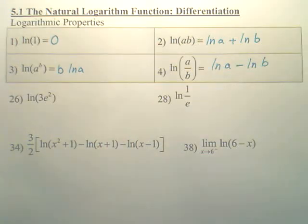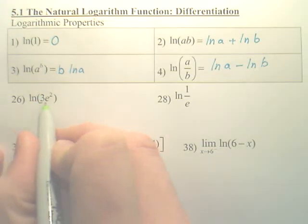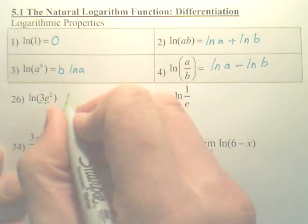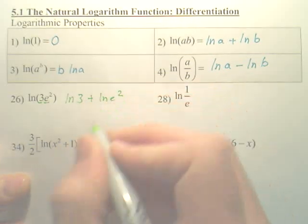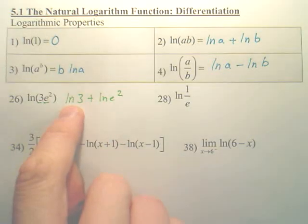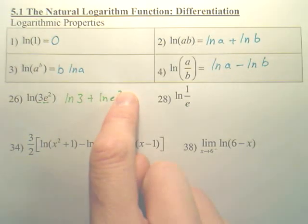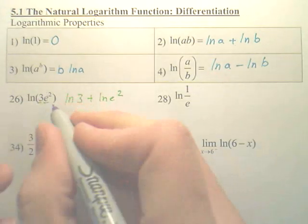So number 26, all they're going to ask you to do is expand it, spread it out, change it. And so what we do is we use the properties. Now do you see right here we have a multiply of two things? So my first step is to, with a multiply, you separate it. So I now will have ln 3 plus ln e². We're not completely done because this we can't simplify—it's just ln 3, it's a decimal, put it in the calculator. This one though, that 2 can jump out front.